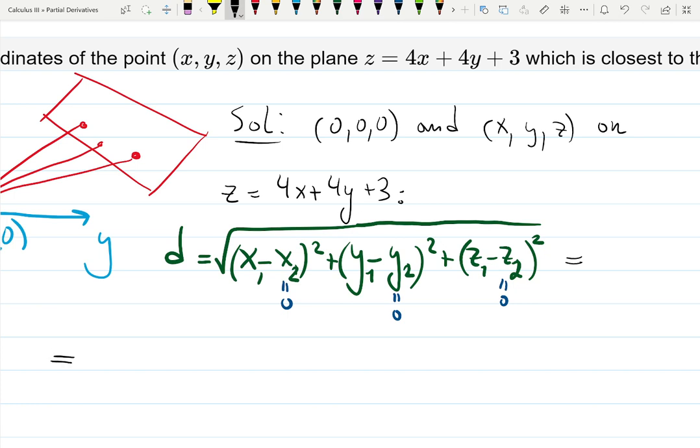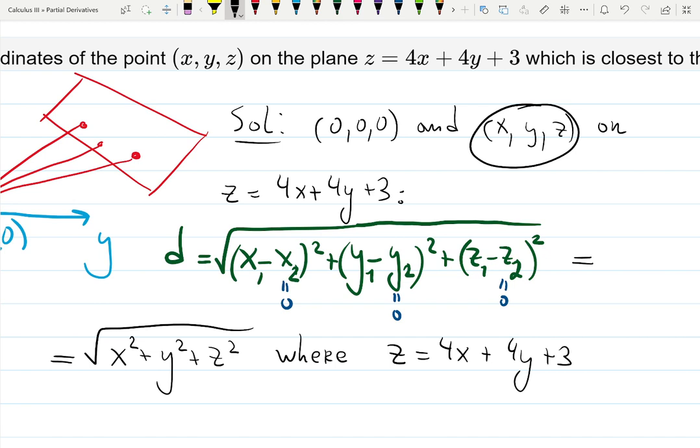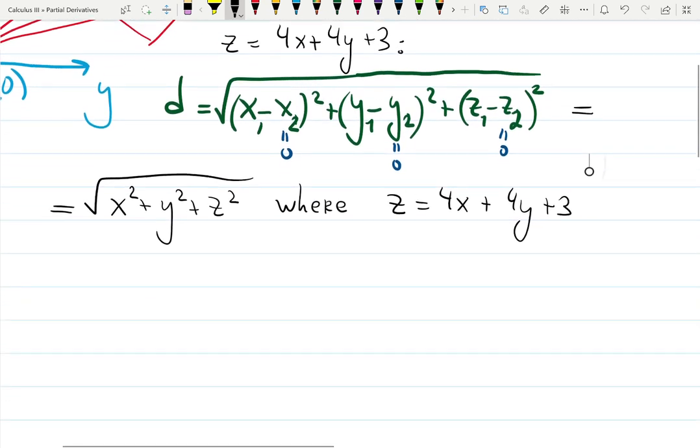So it's going to be the square root of x squared plus y squared plus z squared, where x, y, and z are from the plane. They have the relationship that if you multiply x by 4, multiply y by 4, and then add 3, it gives you z.